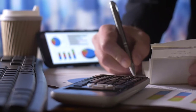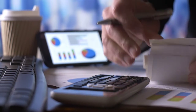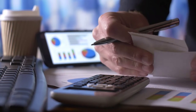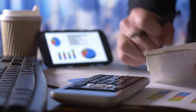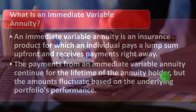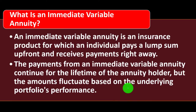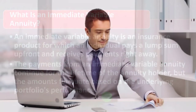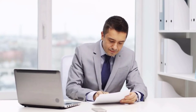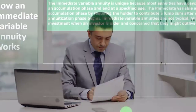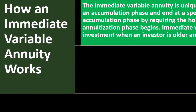They figure out how much the lump sum payment would have to be up front for them to be a profitable business and compete with others doing this kind of work. The amounts fluctuate based on the underlying portfolio's performance — that's where the variable component comes in — based upon that underlying portfolio.